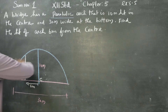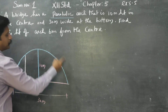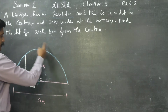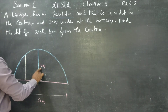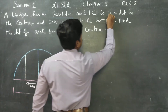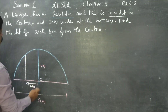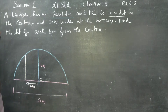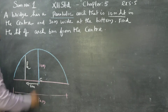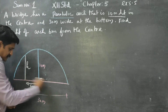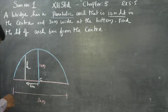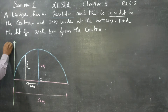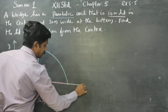The blue line represents the bridge, which is a parabolic shape. The center point is 10 meters in height and 30 meters wide at the bottom. We need to find the height of the arch 6 meters from the center. We will start the main diagram. I am going to draw my y-axis and my x-axis.